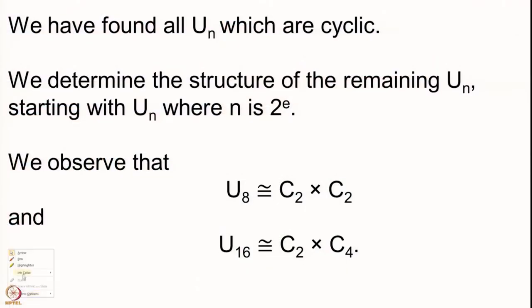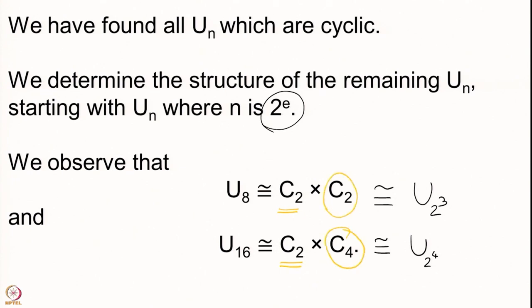Let us recall quickly: we have found all U(n) which are cyclic, and then we are determining the structure of the remaining U(n) starting with U(2^e). We looked at U(2³) = U(8) and U(2⁴) = U(16). We observed that there is one copy of the group C₂ always sitting in these, and the remaining one has order equal to the order of the group divided by 2.